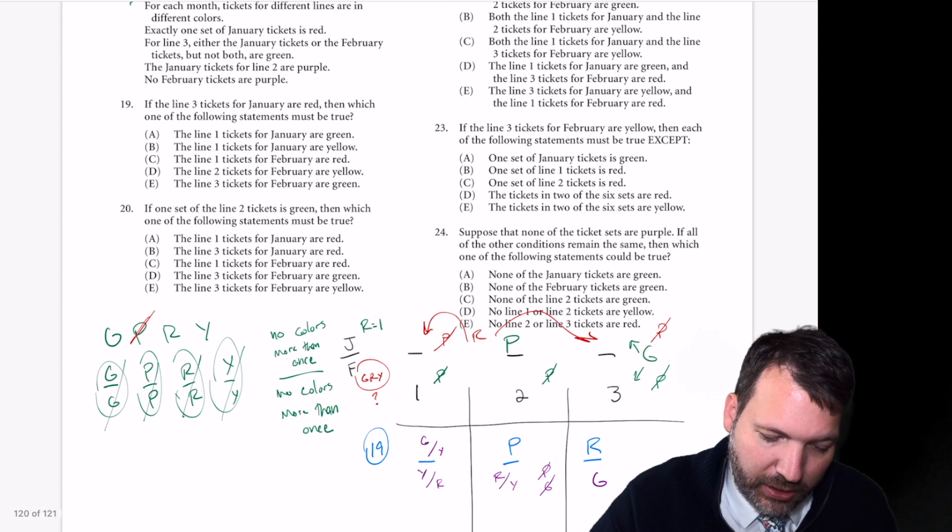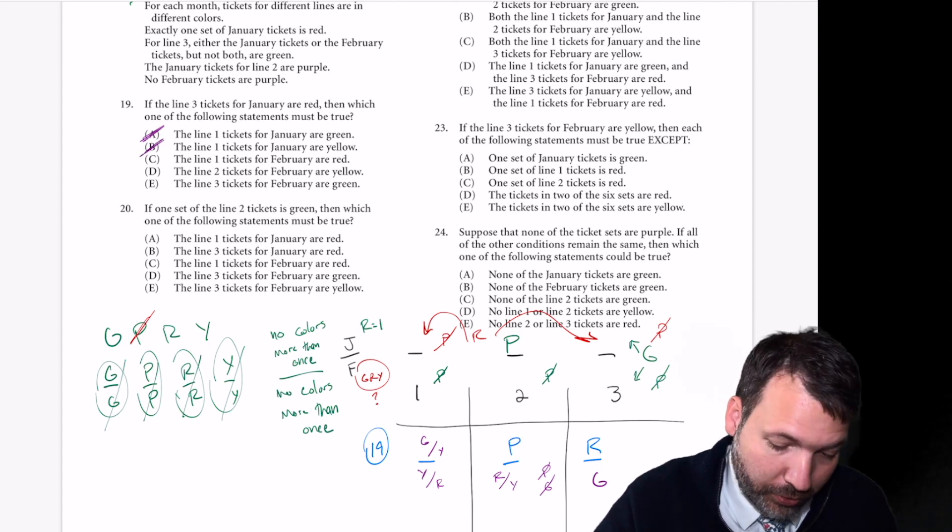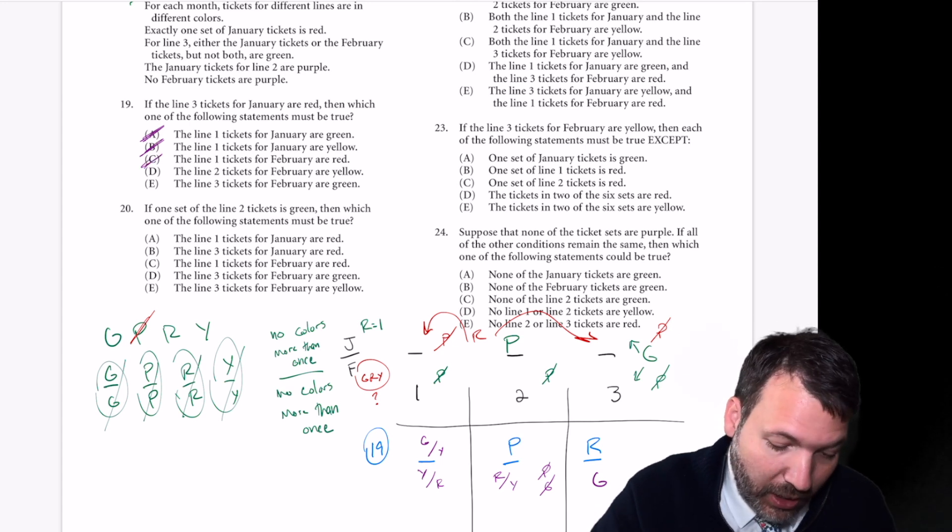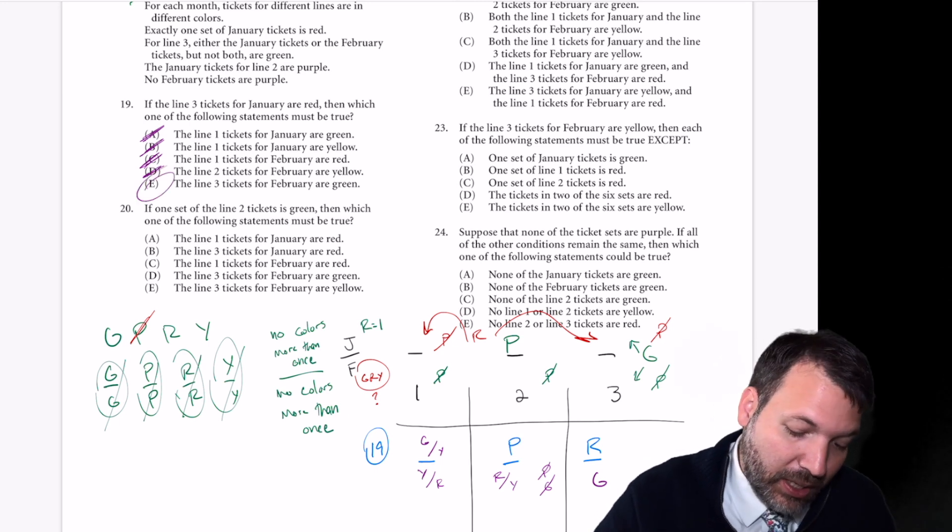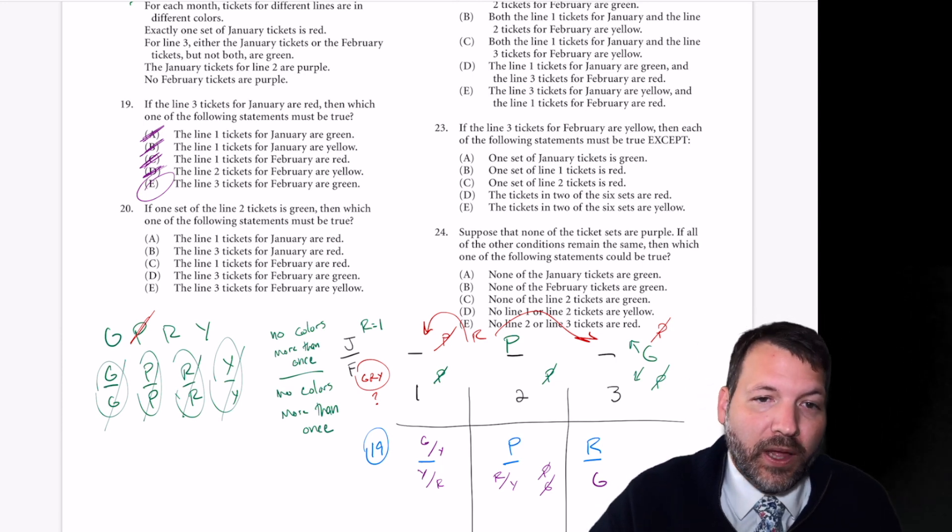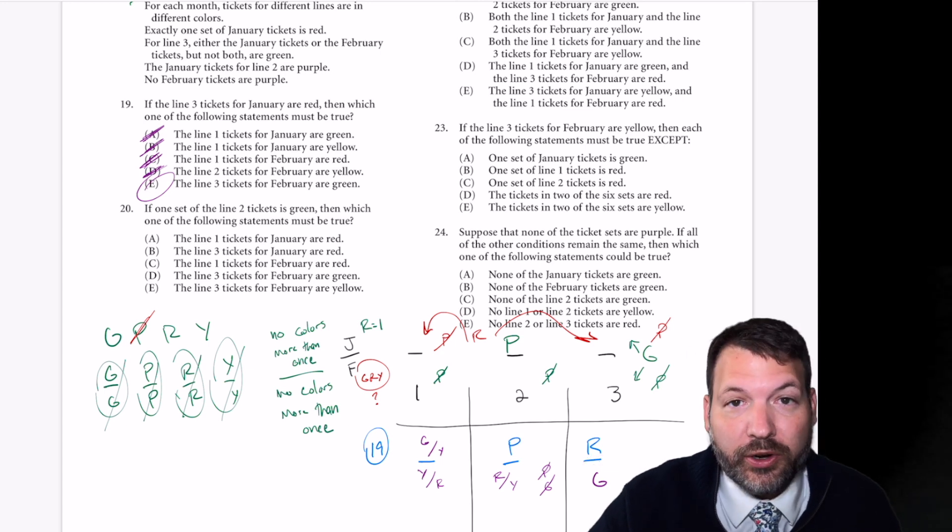All right, this is a must be true. So let's see, line one tickets for January are green. No, not necessarily. Line one tickets for January are yellow. That's possible, but it's not a must be true. The line one tickets for February are red. It's possible, but not a must be. The line two tickets for February are yellow. Possible, but not a must be. Has to be E. You want to resist the temptation to read it, but if you read it, you can see the line three tickets for February are green. And yes, that's the one thing that we figured out there.